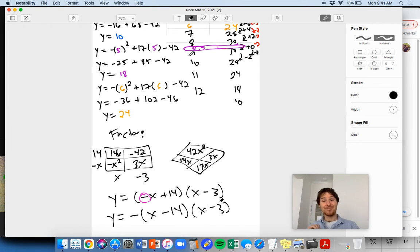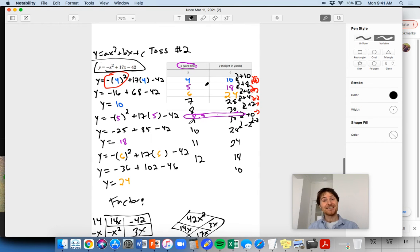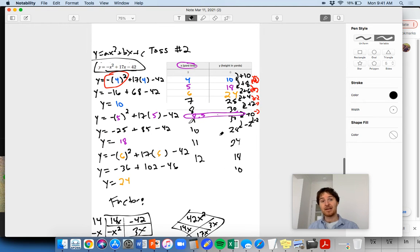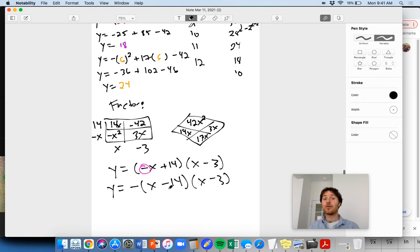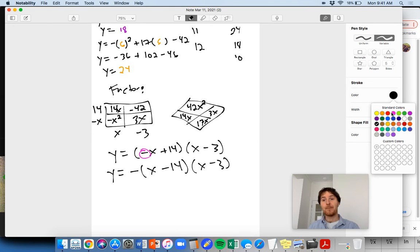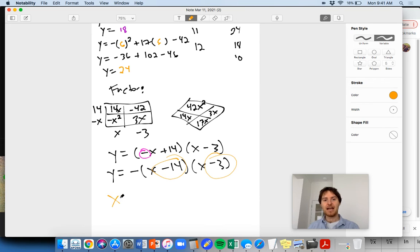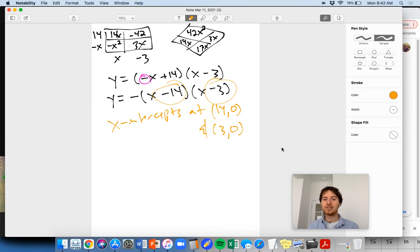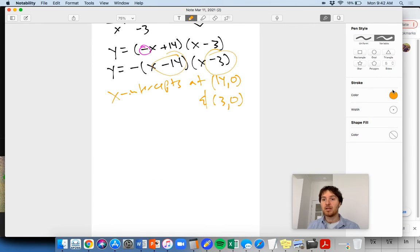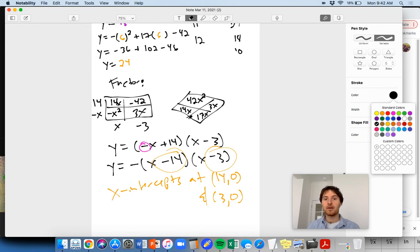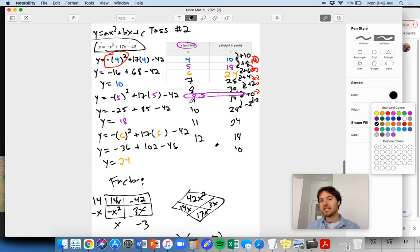And what do we have here? Look at this, factored form. Y equals negative x plus 14 times x minus three. This technically isn't in fully factored form because we have this pesky negative in front. It is a little confusing here if we have this negative in front.